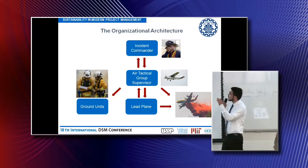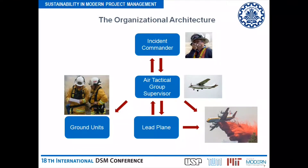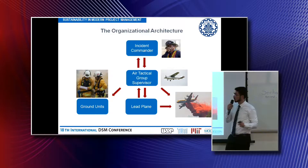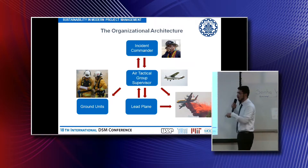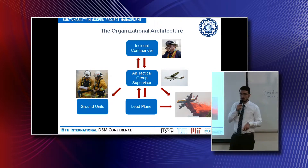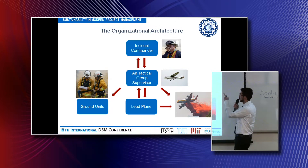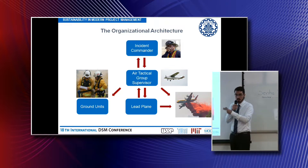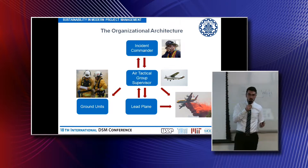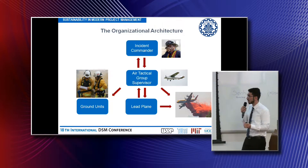This is a schematic of the organizational architecture of firefighting. The incident commander is at the highest level of authority but is located in a ground station far from the incident. There is an air tactical group supervisor — an expert who sits in a single-engine aircraft loitering around the fire incident — who feeds back information to the incident commander. Together they come to a mutual decision about tactics, strategies, and the drop point and pattern.